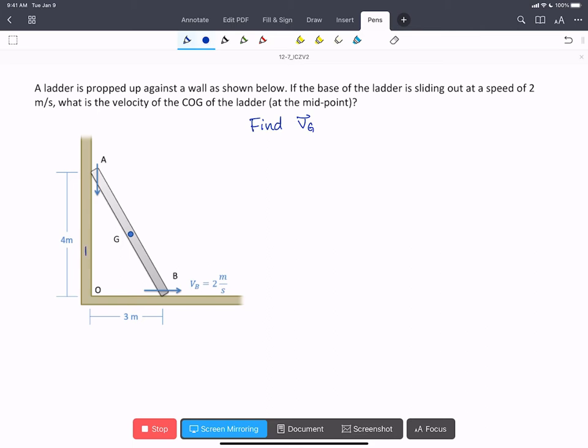We're going to start by putting in our coordinate system, x and y. Then we're going to list all the things that we know. We know that VB has to move along the floor. It's going to be 2 meters per second in the i-hat direction.